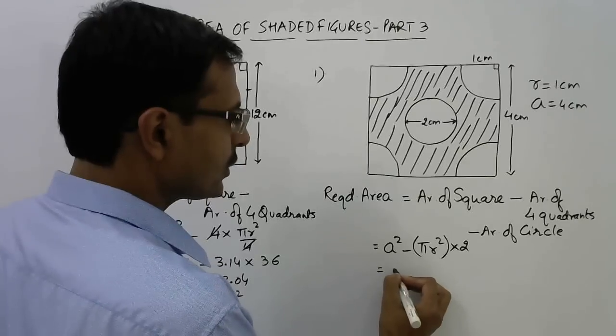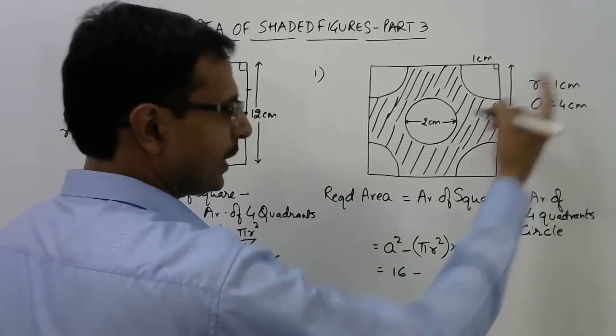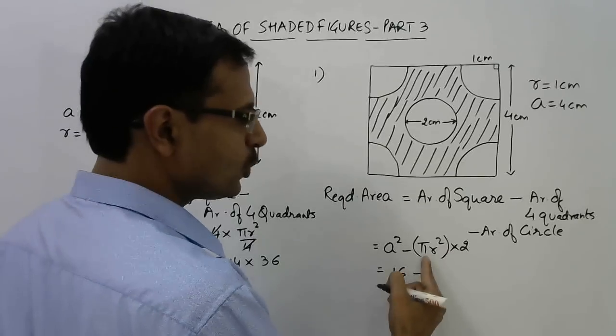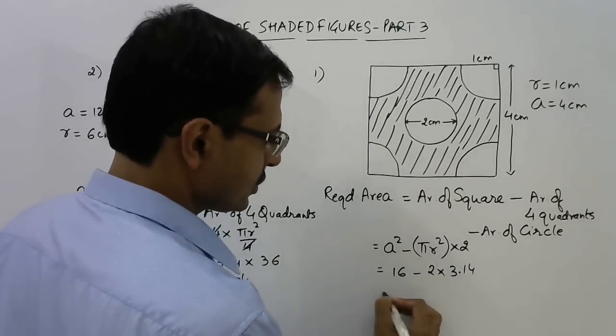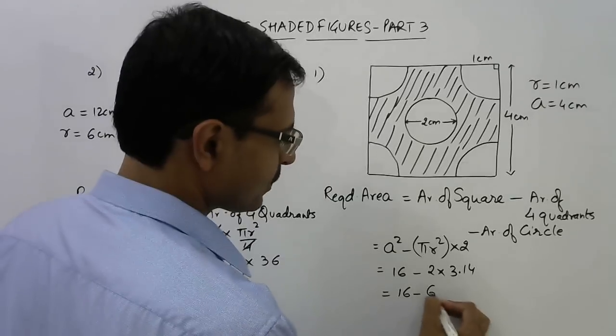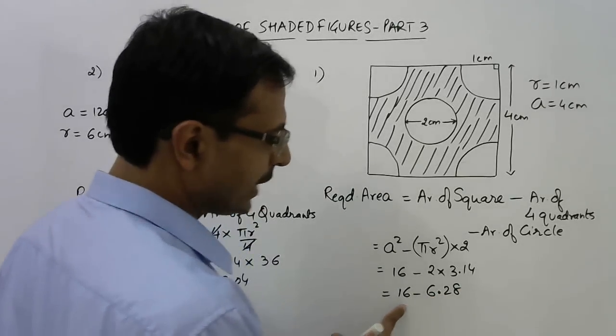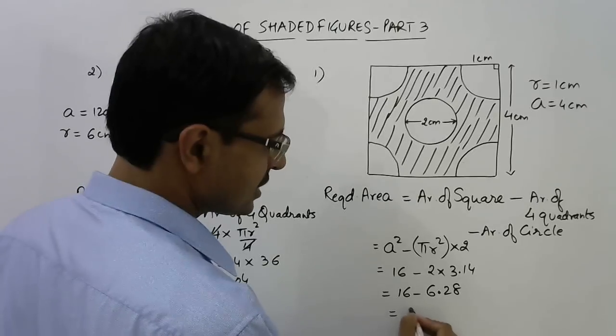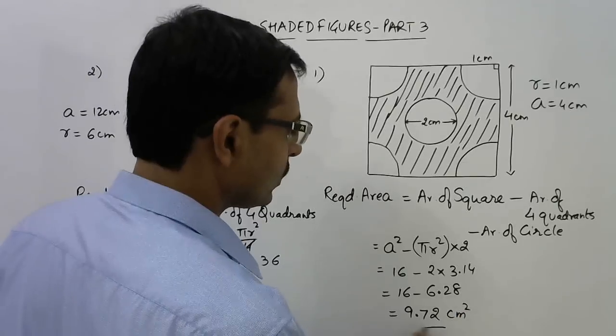Now a here is 4, that means a² is 16. r is 1, therefore only 2π remains. So 2 into 3.14, so 16 minus 6.28. 6 subtracted from 16 gives you 10, and 9.72 is the answer for the question.